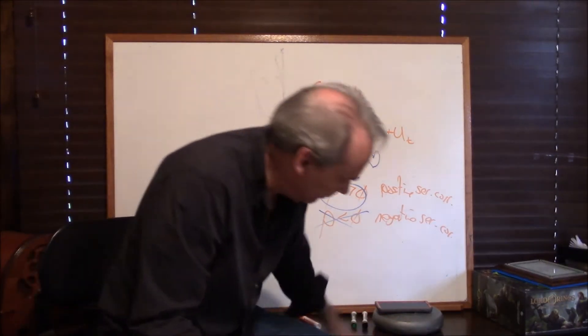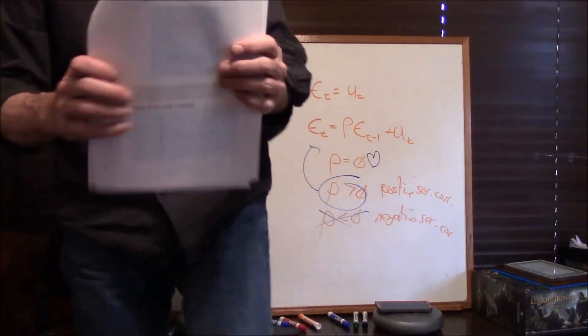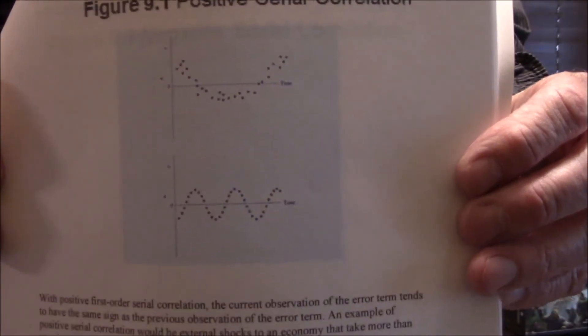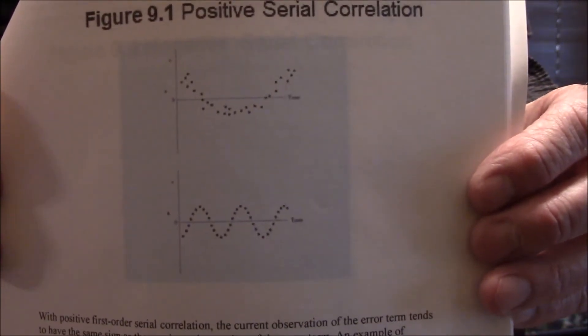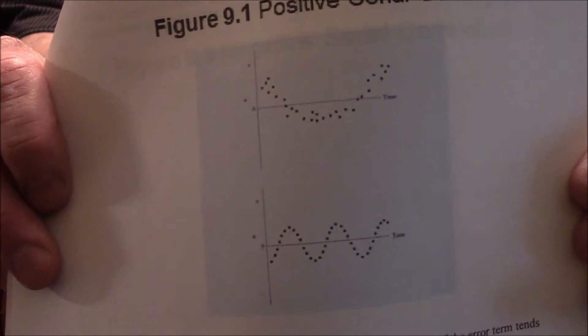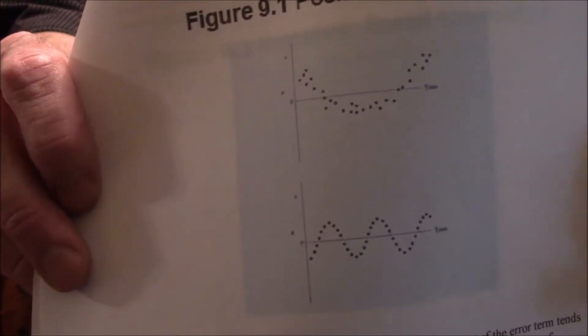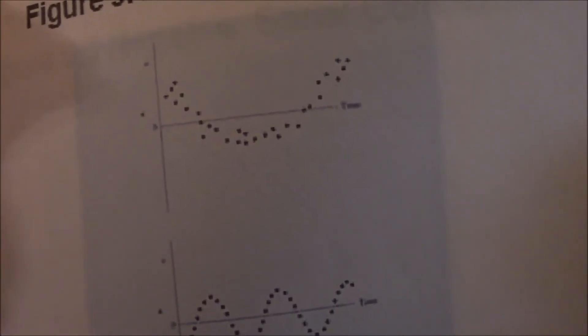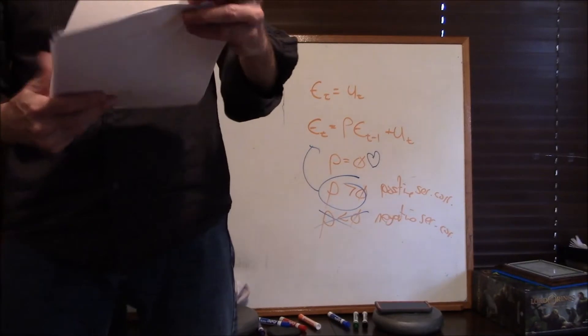Let me show you a couple of pictures from the book. Here's figure 9.1 — those are examples of positive serial correlation; you can see they're following each other. The first looks like what would happen during COVID-19 where unemployment was higher than expected for quite a while after only one shock. Then there's an example of no serial correlation, and some examples of negative correlation where they're bouncing back and forth — but as I said, we don't really encounter that much in economics.